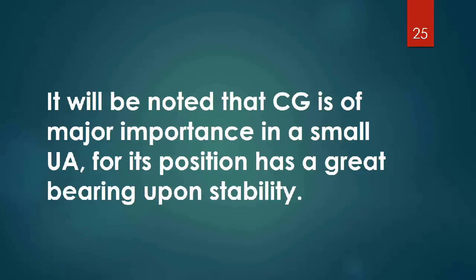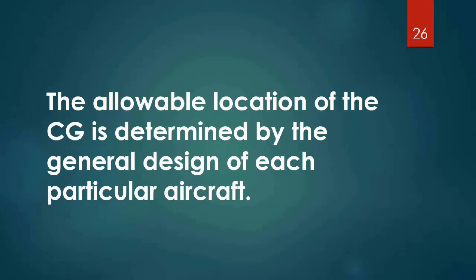It will be noted that CG is of major importance in a small unmanned aircraft for its position has a great bearing upon stability. The allowable location of the CG is determined by the general design of each particular aircraft.